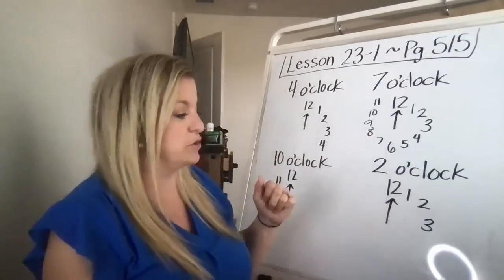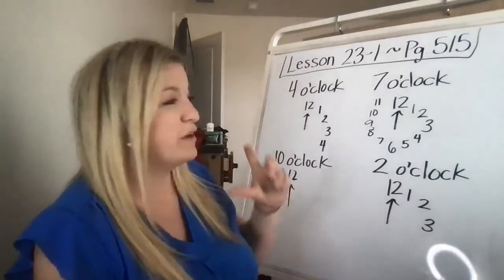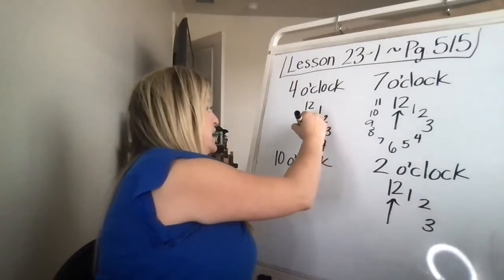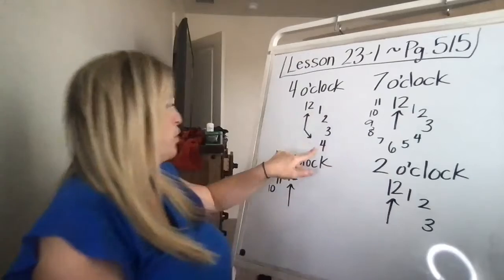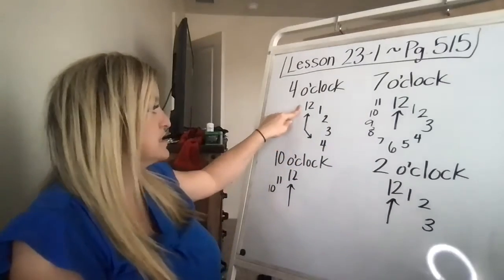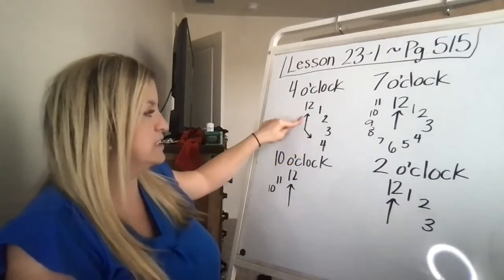So they want you to, in the first one, show four o'clock. So you're going to draw an arrow that is shorter than the minute hand because it's the hour and it's going to point at the four. So if you see my long hand is the minute and it says o'clock, the long hand shows the four. Hour, minutes.